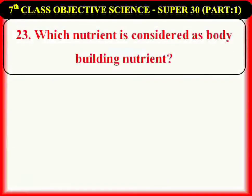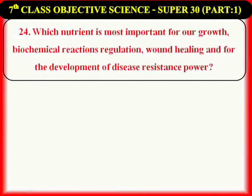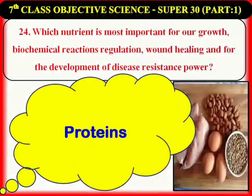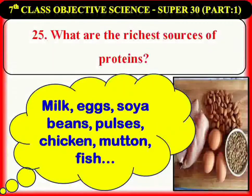Which nutrient is considered as the body-building nutrient? Proteins. Which nutrient is most important for our growth, biochemical reactions, regulation, wound healing, and for the development of disease resistance power? Proteins. What are the richest sources of proteins? Milk, eggs, soya beans, pulses, chicken, mutton, fish, pork, beef, etc.